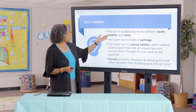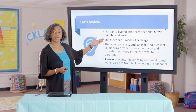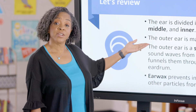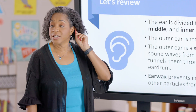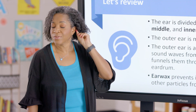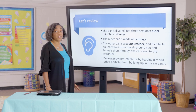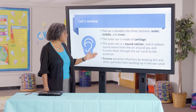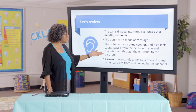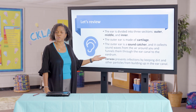The ear is divided into three sections: outer, middle, and inner. The outer ear is made of cartilage. Remember this top part around here. The outer ear is a sound catcher, and it collects sound waves from the air around you and funnels them through the ear canal to the eardrum.